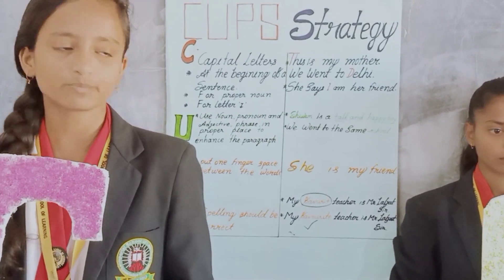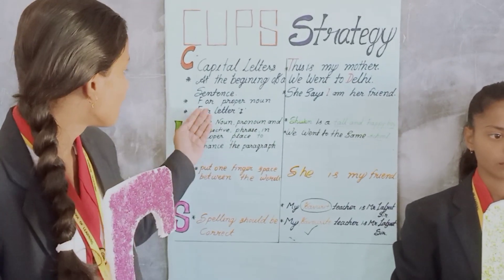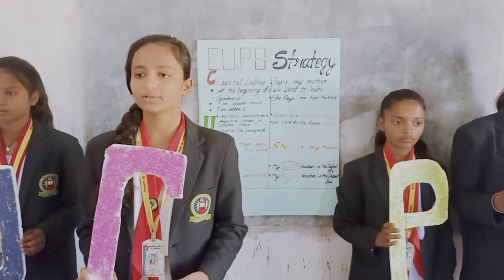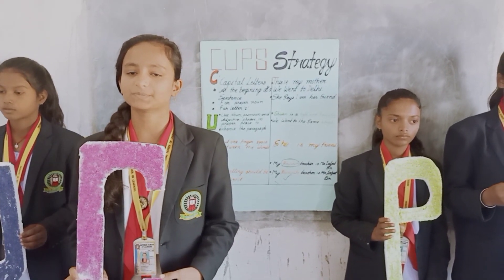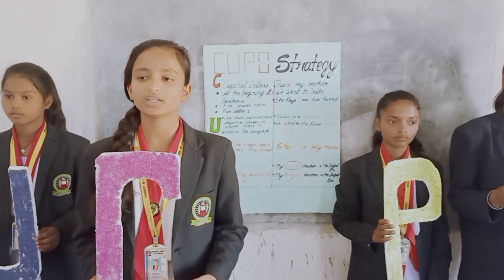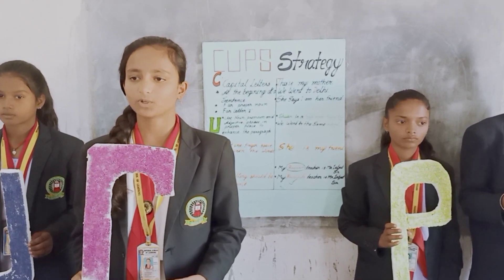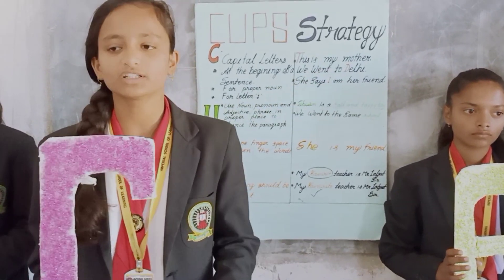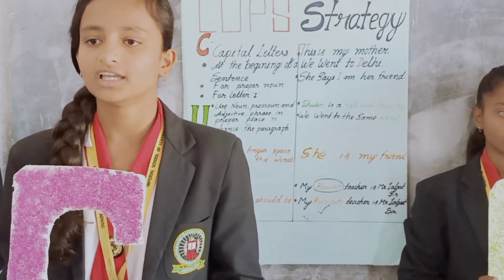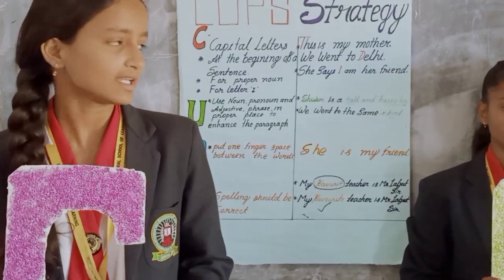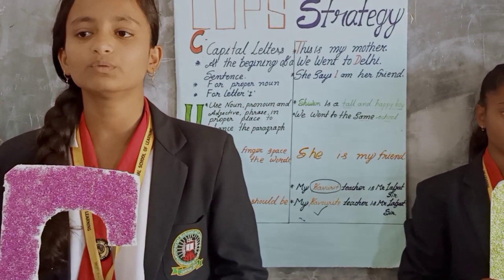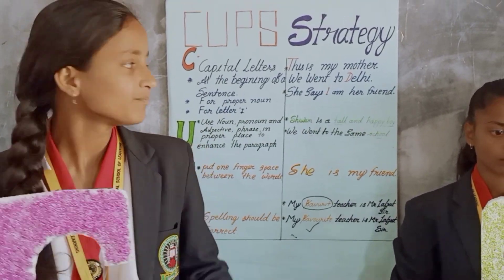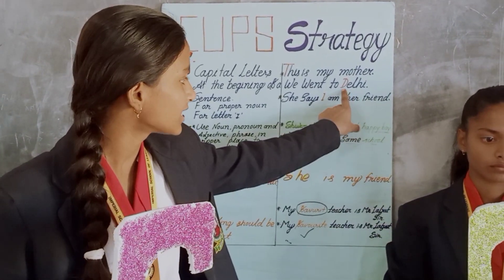The second point is for proper nouns. For example, 'We went to Delhi.' In this sentence, Delhi is a proper noun, so the first letter D is written as a capital letter.